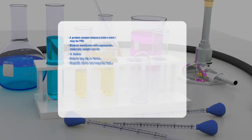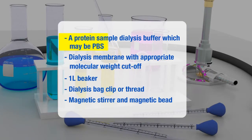In this experiment, the materials required are as follows. Dialysis is a simple and straightforward process. We will need a protein sample, dialysis buffer which may be phosphate buffered saline, dialysis membrane with appropriate molecular weight cutoff, a one liter beaker, dialysis bag clip or a thread, magnetic stirrer, and magnetic bead.